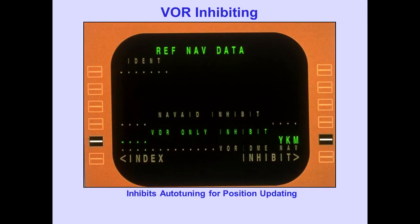Entering a VOR Station Identifier on the VOR Only Inhibit Line inhibits auto-tuning of that VOR Station for FMC position updating. These stations can still be manually tuned, procedure tuned, and route tuned.